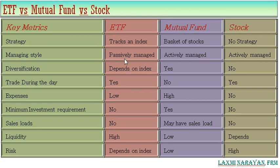The second key metric is managing style. ETFs are passively managed — they directly take the same weightage of stocks as the index. Mutual funds are actively managed, because the manager selects stocks as per their strategy with no limitation on weighting. Stocks are also actively managed in the sense that you are the one selecting and buying the stock.